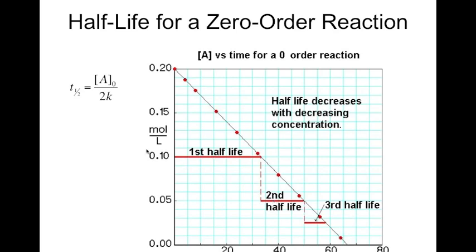Finally, let's look at the half-life equation for a zero-order reaction. The half-life depends on the initial concentration divided by two times the rate constant. If we plot concentration versus time we get a straight line — a hallmark of a zero-order reaction. Going from 0.2 to 0.1 molar is the first half-life; from 0.1 to 0.05 molar the half-life gets shorter; and it gets shorter again for the third half-life. So for a zero-order reaction, as the initial concentration decreases, the half-life decreases as well. Be aware of these relationships between concentration, half-life length, and the overall order of the reaction.